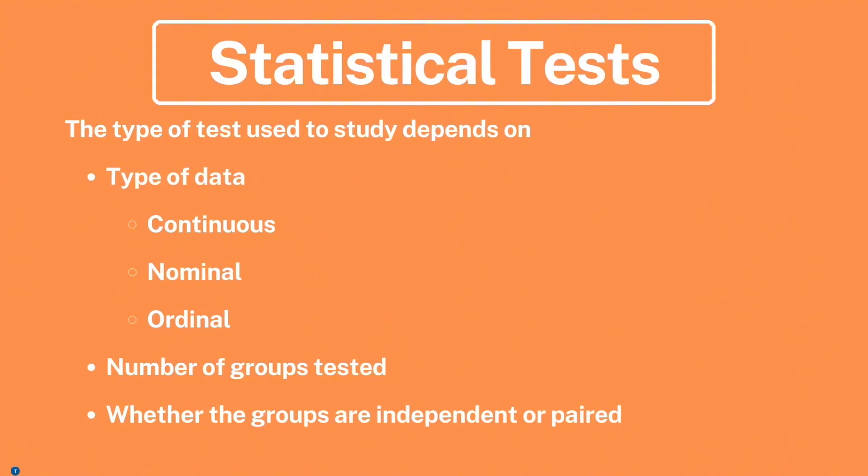Statistical tests: this is very important because on the NAPLEX exam they could give you a study and ask you which test should be used for this study. Selecting the appropriate statistical test for a research study hinges on several key factors. First and foremost is the type of data being analyzed, which can be categorized as continuous, nominal, or ordinal.